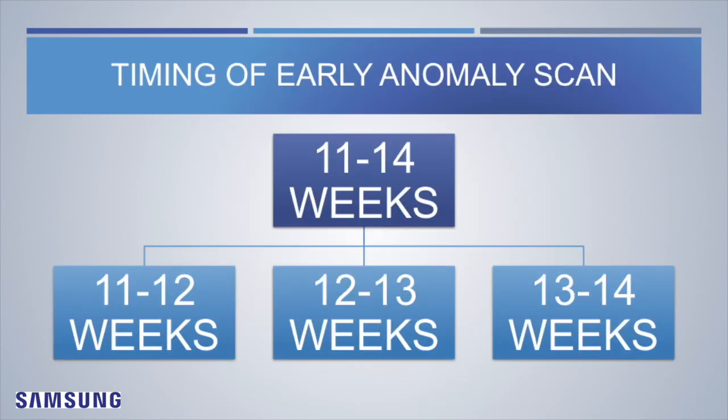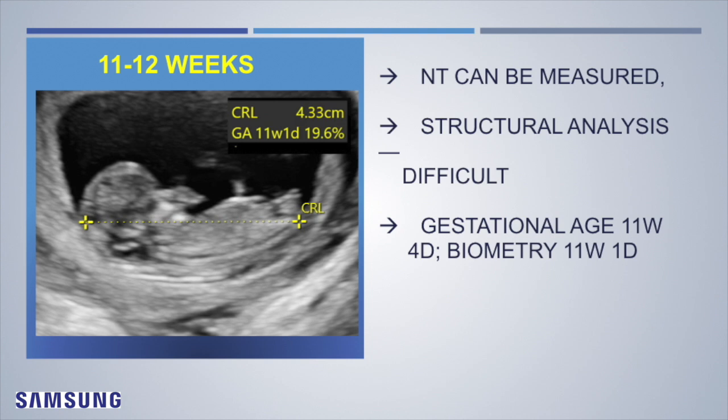Even though we do it between 11 to 14 weeks, there are different considerations at 11, 12, or 13 weeks. If you scan a patient between 11 to 12 weeks, NT can be measured but structural analysis is difficult. The gestational age may be 11 weeks 4 days but biometry may correspond to just 11 weeks 1 day, because plus or minus 3 to 4 days is always in an acceptable range. As seen here, the CRL is just 4.3 cm — practically not even 45 millimeters, which is not ideal for NT scanning.